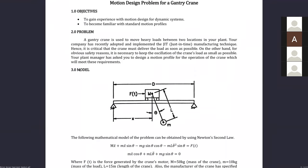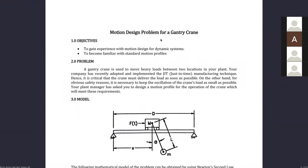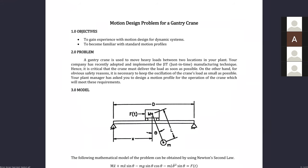To recap: this is the motion design problem for a gantry crane. Up top we have a cart, then we have a crane arm, and then a load on the bottom. Our goal is to apply a force on this cart — we're going to use three different force profiles: a constant force, a linear force, and a harmonic force. We need to take the load from one position to another in the shortest amount of time while also having minimal oscillations for the load.